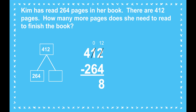But 0 minus 6 is impossible in this equation, so I'm going to have to go next door and take 100. That will give me 10 tens. Since I don't have any tens to add it to, 10 minus 6 is 4. Now all that's left is my hundreds place: 3 one-hundreds minus 2 is 1. Kim has 148 pages left to read.